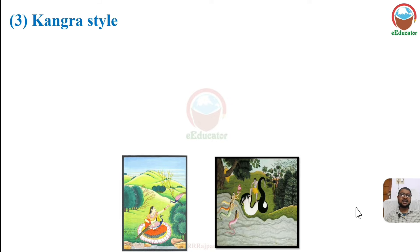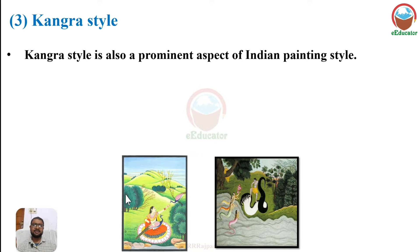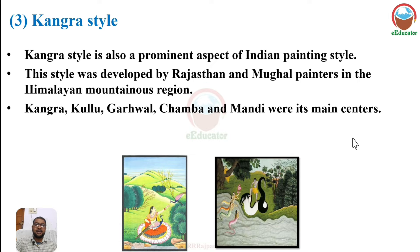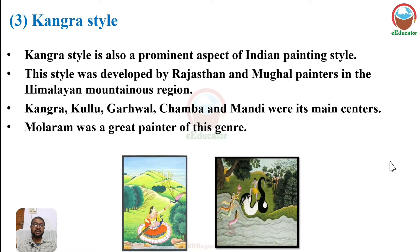Kangra style of painting is generally found in the Kangra region of the Himalayas. It is a prominent aspect of Indian painting. This style was developed by Rajasthani and Mughal painters in the Himalayan mountainous region. Kangra, Kullu, Gharwal, Chamba, and Mandi were its main centers. Mollaram was a great painter of the Kangra style.